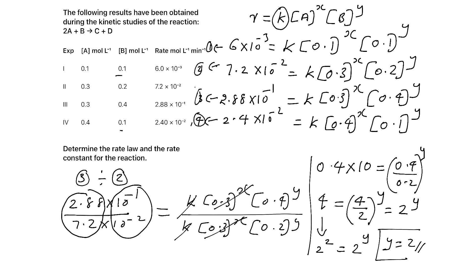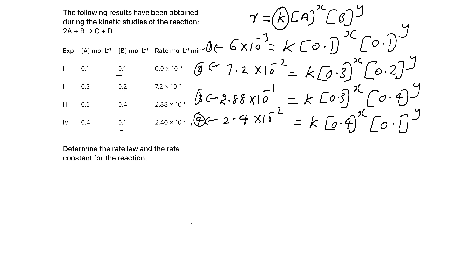Now our task is to find X. For that, choose equations 1 and 4. You can see that if you divide equation 4 by equation 1, the Y terms cancel off, so you can find X easily.